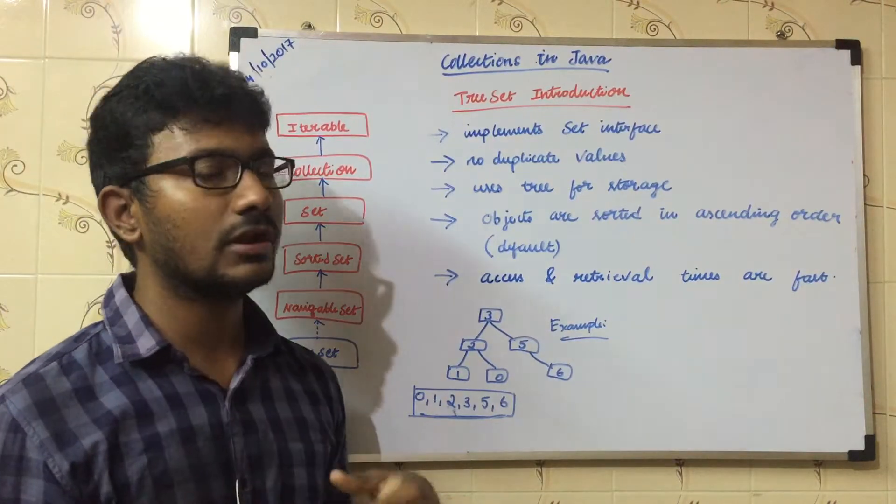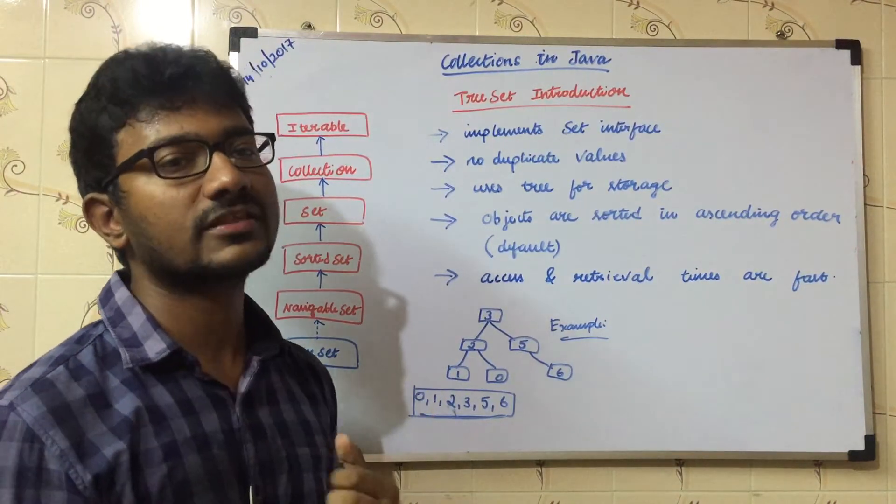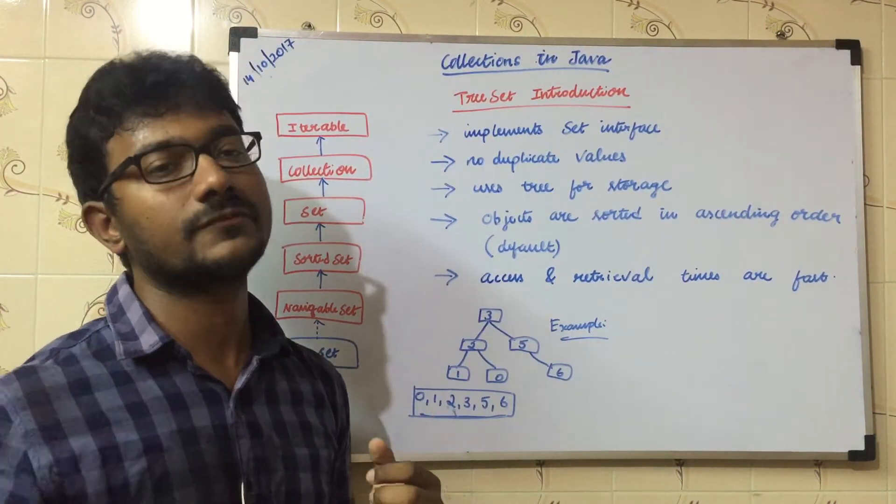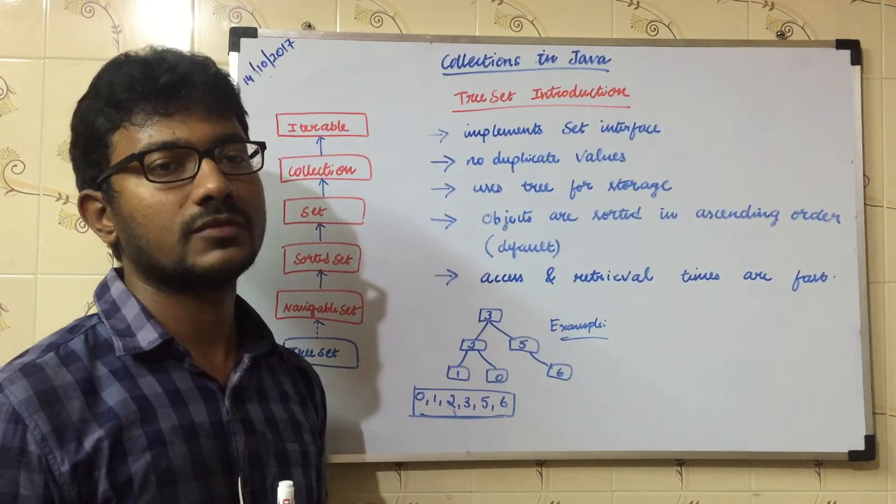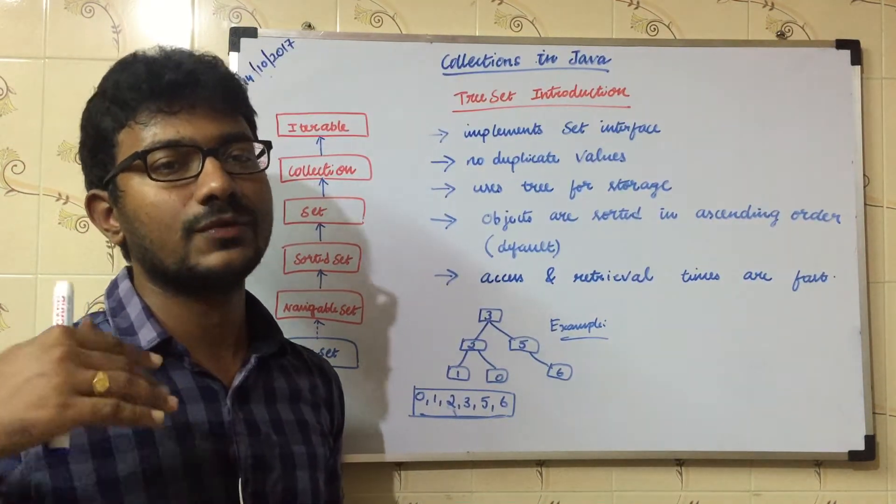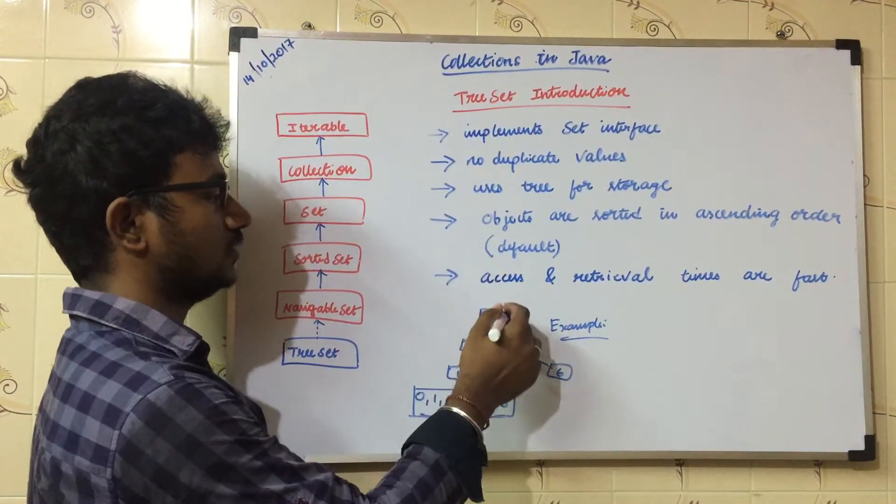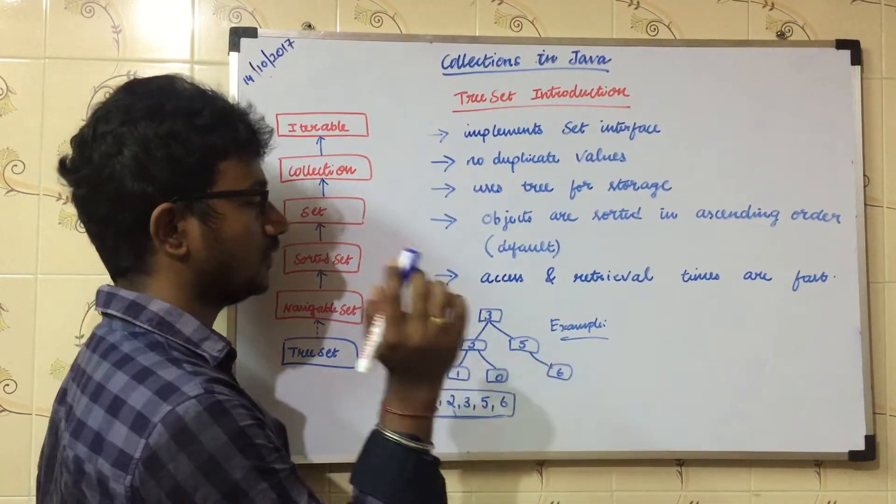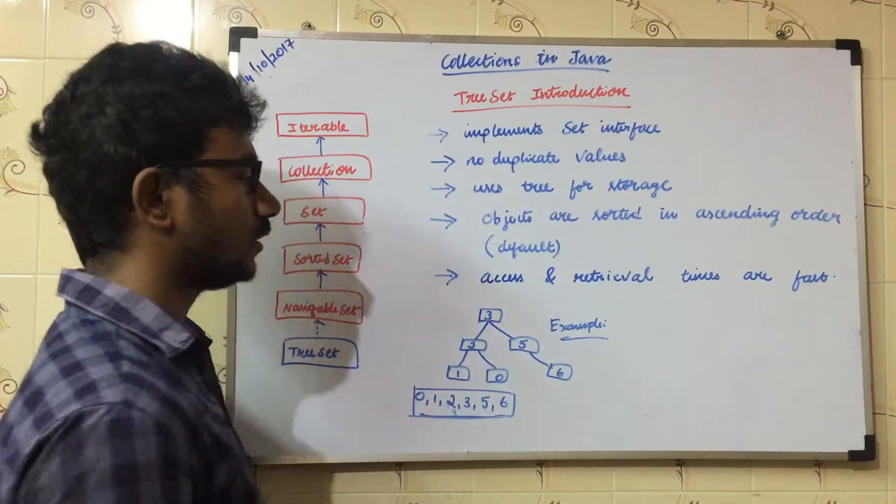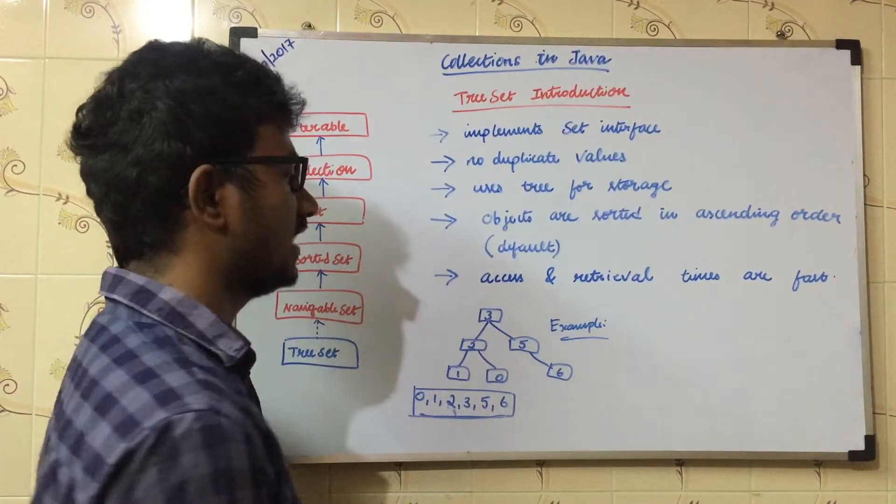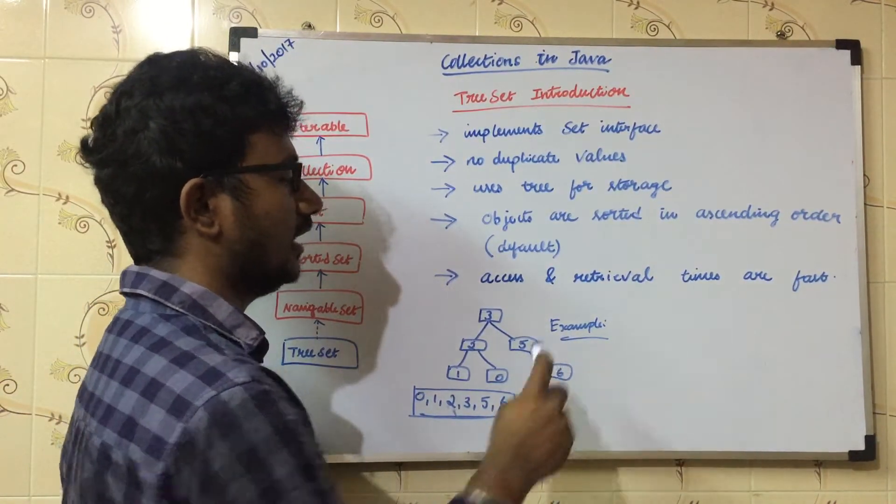If you haven't studied about the tree data structure, please try to comment in the comments of this video so that I can make a video for that. For now, just consider this a tree. So 3, 2, 1, 0, 5, 6. If you are trying to add a new element 7, it would be added here like that.